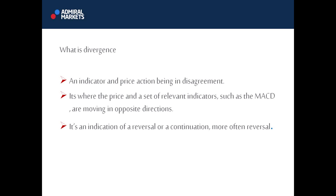So what is divergence? Divergence is an indicator and price action being in disagreement. When the indicator and price action are in disagreement, we have divergence. That means the oscillator is going up while price action is going down — they are in disagreement. Divergence means they are diverging from each other, not in agreement. It's where the price and a relevant indicator such as MACD are moving in opposite directions.